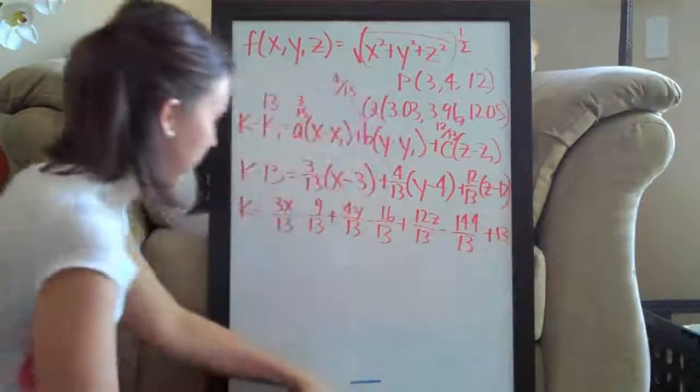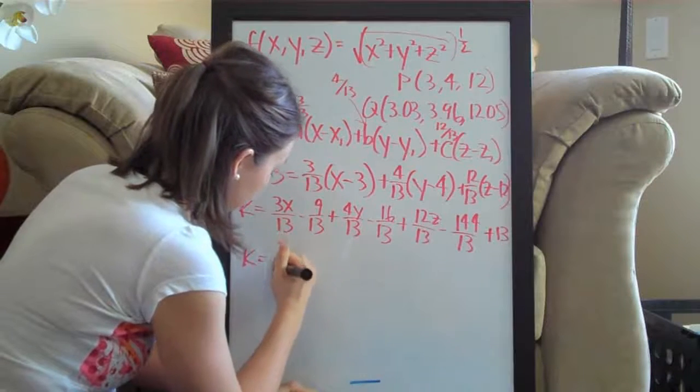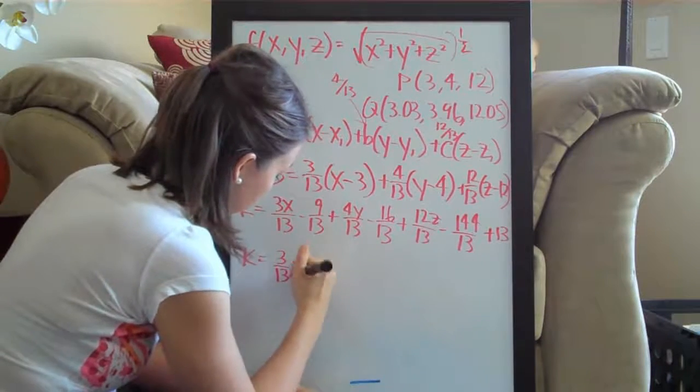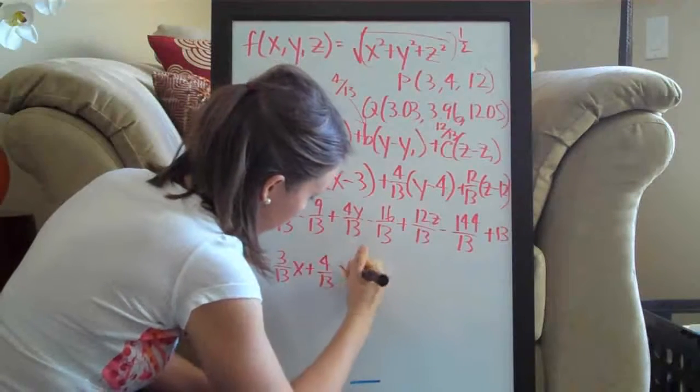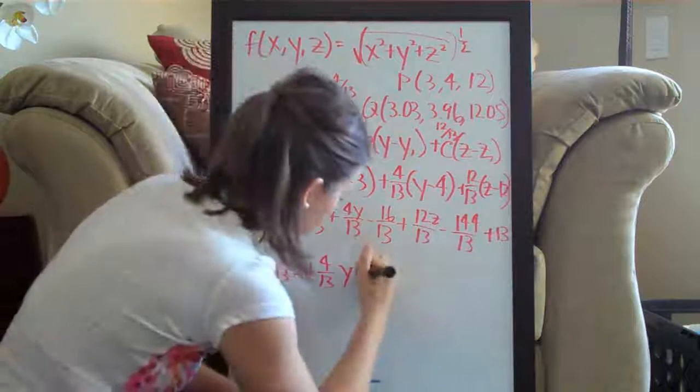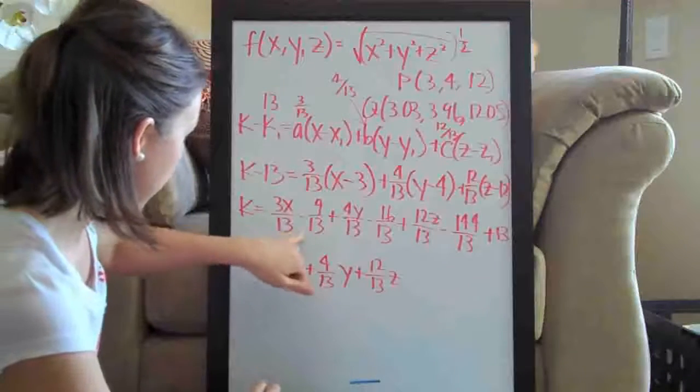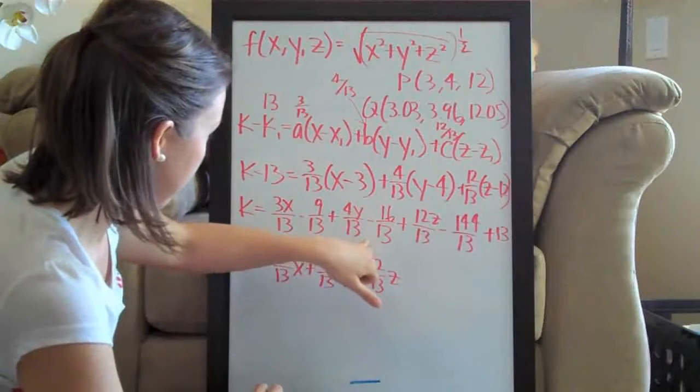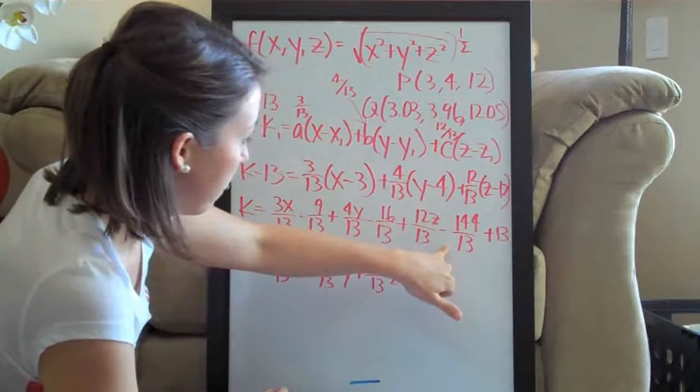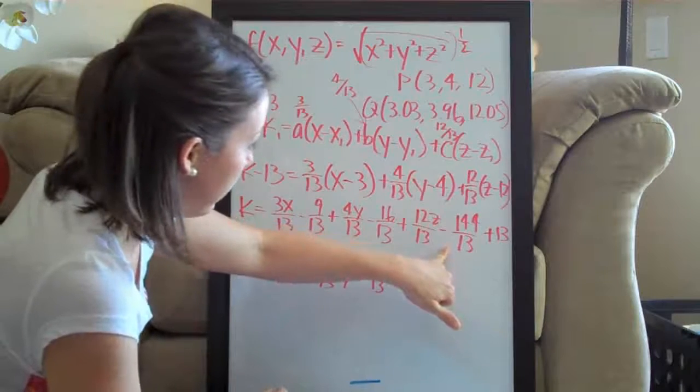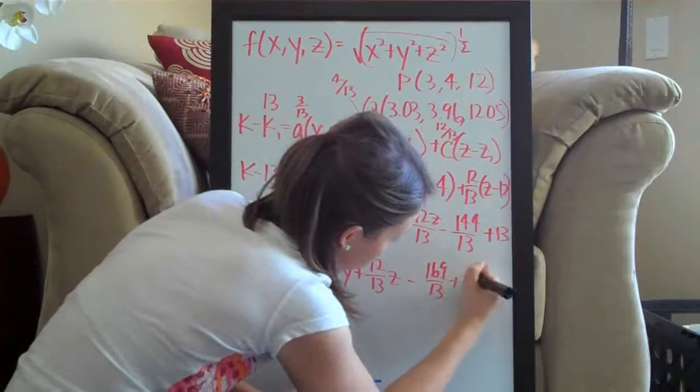So we're going to end up with k equals, let's go ahead and write it this way, three over thirteen times x plus four thirteenths y plus twelve thirteenths z. And then we have minus nine minus sixteen is minus twenty-five minus one forty-four is minus one sixty-nine. So we have minus one sixty-nine over thirteen plus thirteen.